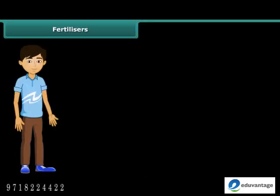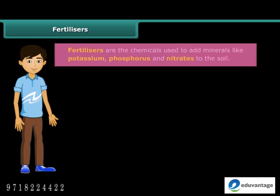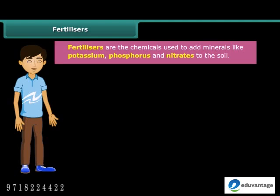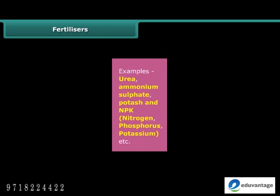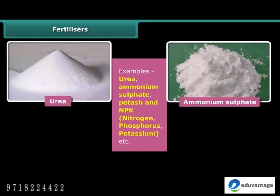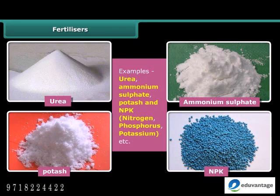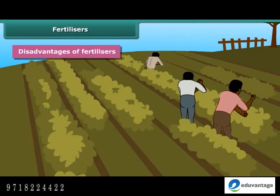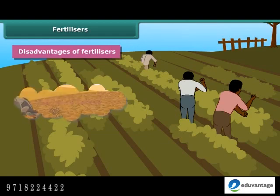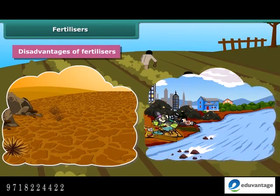Like manure, fertilizers are also used to replenish the lost nutrients and minerals in the soil. Fertilizers are chemicals used to add minerals like potassium, phosphorus and nitrates to the soil. Fertilizers are produced in factories. Some examples of fertilizers are urea, ammonium sulfate, potash and NPK — nitrogen, phosphorus and potassium. The use of fertilizers increases the crop yield. However, excessive use of fertilizers makes the soil less fertile, and they have also become a source of water pollution.